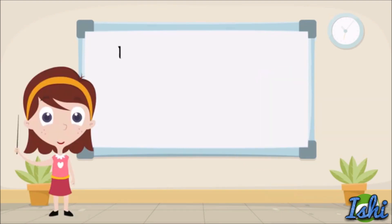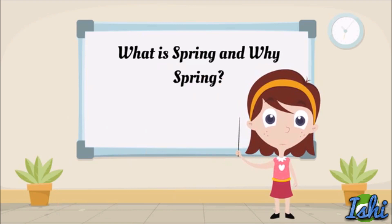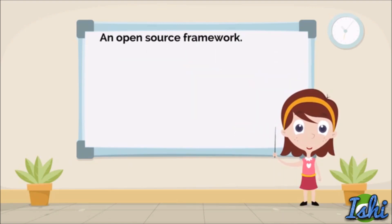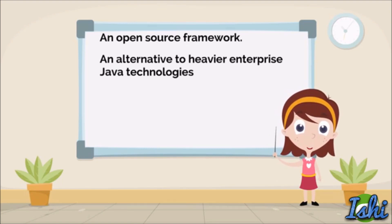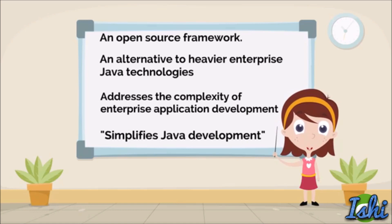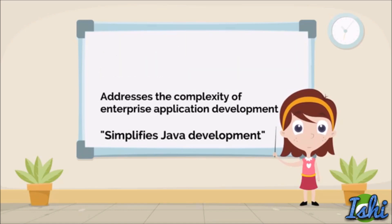As the first thing, let's see what is Spring and why is it used. Spring is an open source framework and it was introduced as an alternative to heavier enterprise Java technologies. For example, Spring is an alternative to EJBs — Enterprise Java Beans. Spring also addresses the complexity of enterprise application development. So in a simple sentence, Spring simplifies Java development.